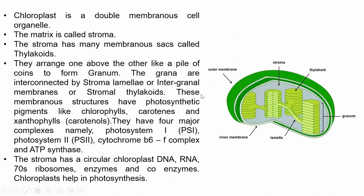The matrix of the chloroplast is called the stroma. The stroma has many membranous sac-like structures called thylakoids — imagine a thylakoid as a single coin. When thylakoids are arranged in a pile like a stack of coins, they form a granum. The grana are interconnected by stroma lamella, also known as intergranal membranes or stromal thylakoids.